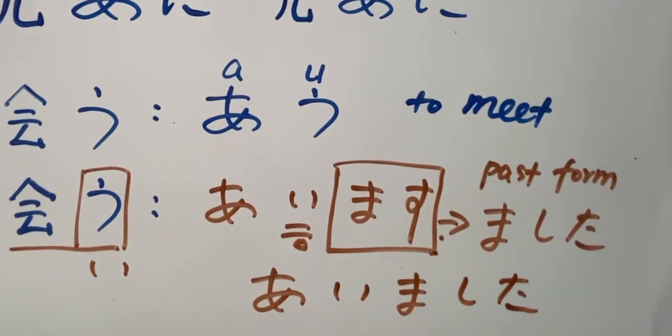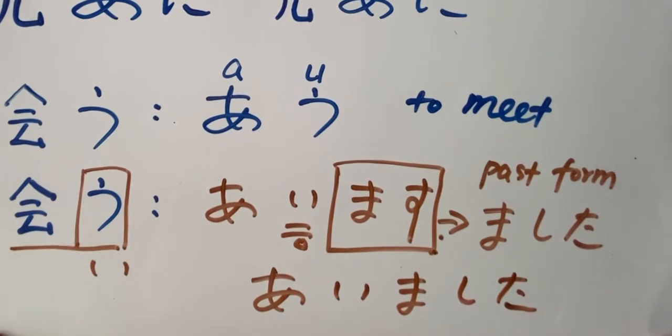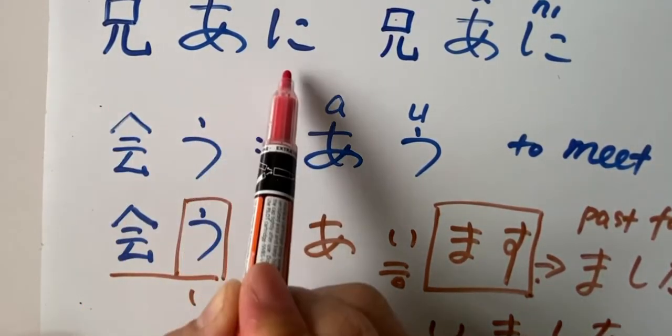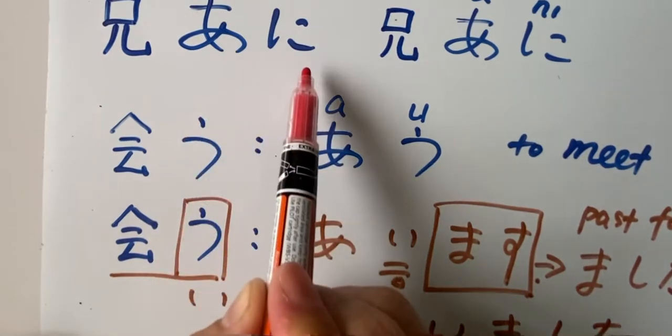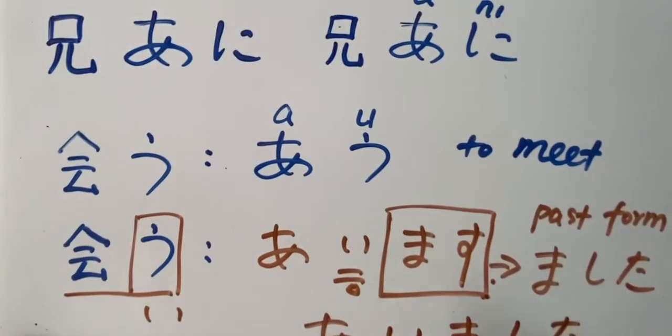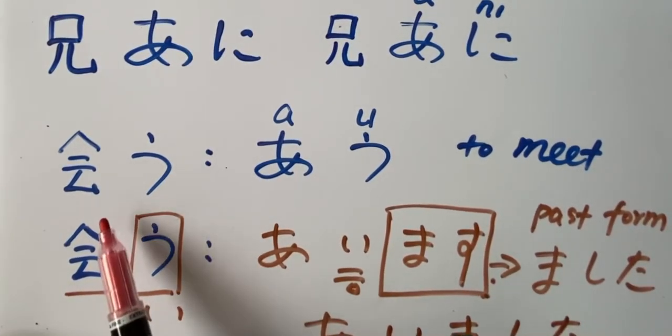Okay. So over here we have two words. One is a noun. Ani. Ani. My older brother. And then we have our verb here. Au.